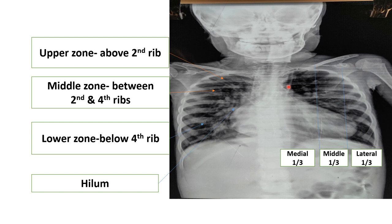After that, we comment on the hilum. There is a ring-like shadow around the hilum which is the end of the bronchus, and the solid shadows are the blood vessels.